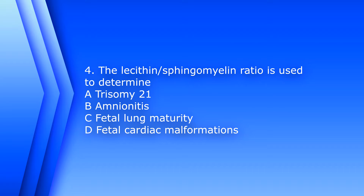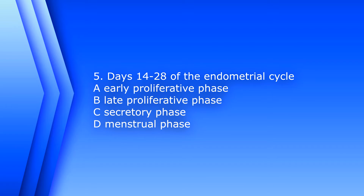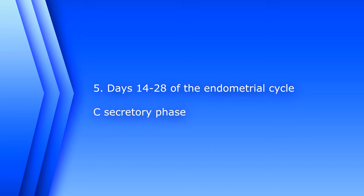Number 4. The lecithin sphingomyelin ratio is used to determine: A. Trisomy 21 or Down syndrome. B. Amnionitis. C. Fetal lung maturity. Number 5. Days 14 through 28 of the endometrial cycle is: A. Early proliferative phase. B. Late proliferative phase. C. Secretory phase. D. Menstrual phase. The answer is C. Secretory phase.